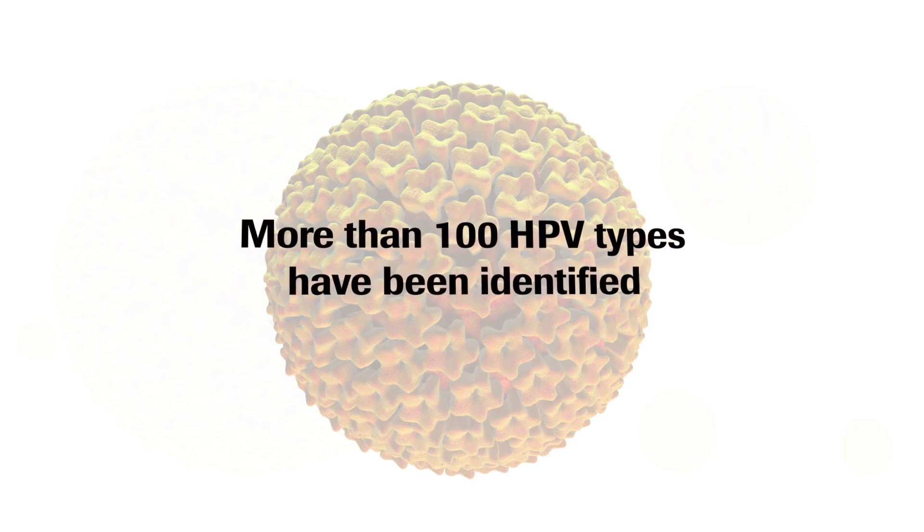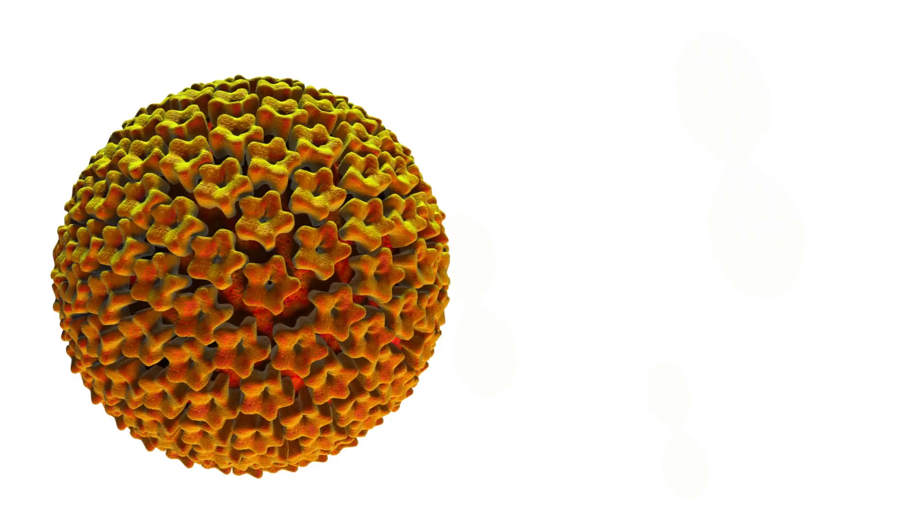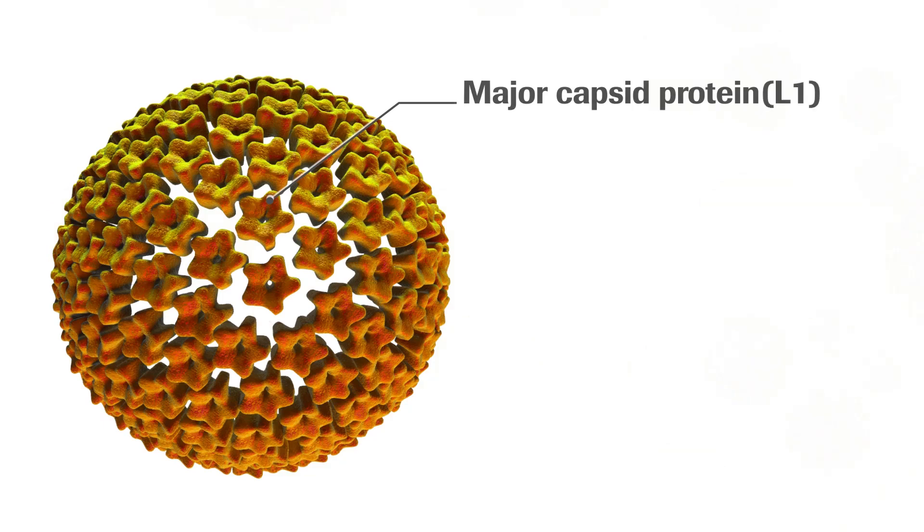More than 100 HPV types have been identified, and they are differentiated by the genetic sequence of the protective outer shell, or capsid, made of a protein called L1.